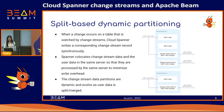Next, we're going to cover Spanner change stream's internal storage. Change streams internally uses a Spanner table to store change data. We have user splits — a user split represents an immutable key range of data, and the change stream splits track these immutable key ranges of data. When a change occurs on a user split tracked by change stream, Cloud Spanner writes a corresponding change stream record to the change stream split. Spanner co-locates the change stream data and the user data in the same serving resource so that they are processed by the same server to minimize write overhead.